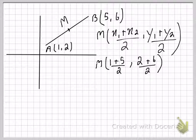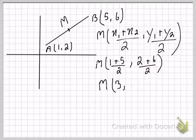Now, 1 plus 5 is 6 and 6 upon 2 is 3. So the x coordinate of the midpoint is 3, and 2 plus 6 is 8. 8 upon 2 is 4.